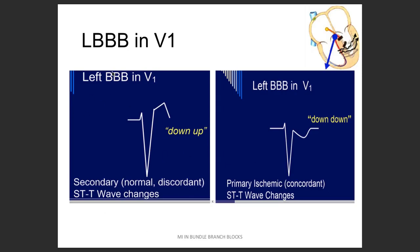For the left bundle branch block in V1, if we remember the criteria, in V1 there will be a negative deflection, with wide QRS, which will be more diagnostic. Then you start seeing those secondary ST segment changes. For example, there is more of a negative deflection in V1. However, the T wave or ST segment changes — is it positive or negative? It is positive. So is this concordance or discordance? Opposite directions — so this is discordance.